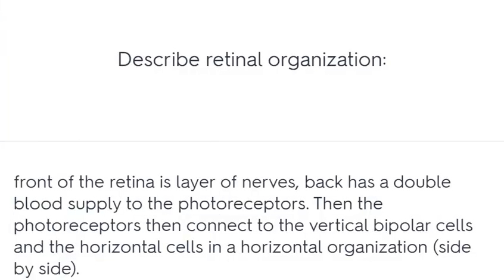Describe retinal organization. The front of the retina is a layer of nerves. The back has a double blood supply to the photoreceptors. The photoreceptors then connect to vertical bipolar cells and horizontal cells in a horizontal organization.